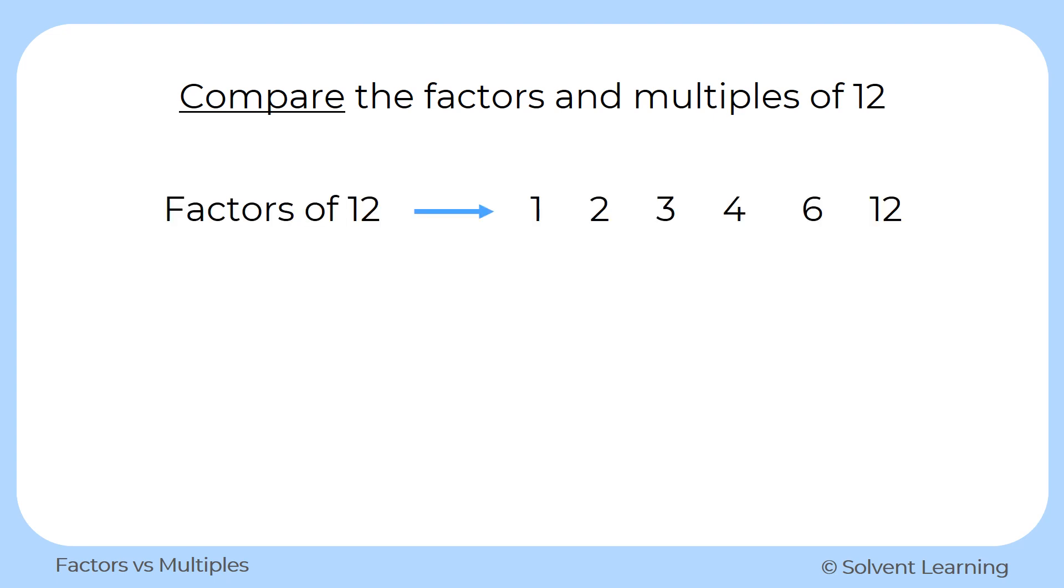Factors are numbers that can divide into 12 without having a remainder. So we have 1, 2, 3, 4, 6, and 12.